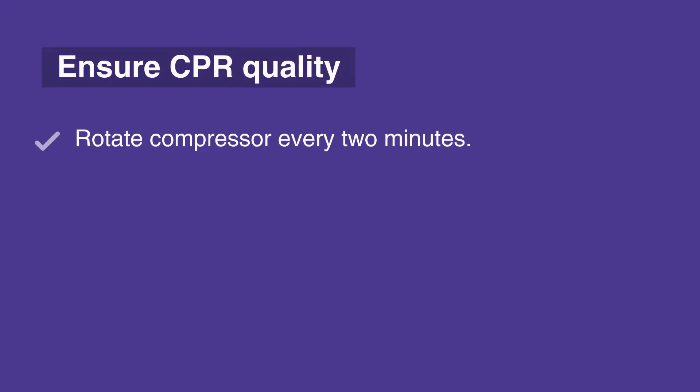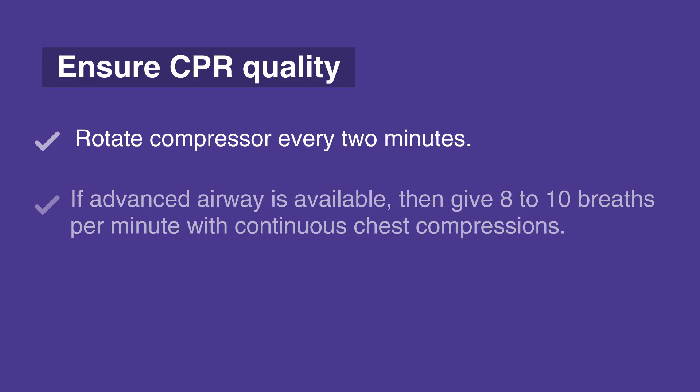If no advanced airway is available, the compression to ventilation ratio should be 15 to 2. If an advanced airway is available, then give 8 to 10 breaths per minute with continuous chest compressions.